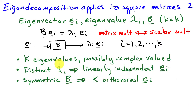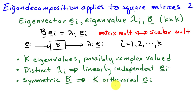These eigenvalues can possibly be complex valued. If we have distinct eigenvalues, then there are linearly independent eigenvectors that correspond to those. Repeated eigenvalues don't necessarily have a set of linearly independent eigenvectors associated with them. When this matrix is symmetric, then we have a guarantee that there are k — in other words, a complete set of orthonormal eigenvectors associated with that particular matrix.